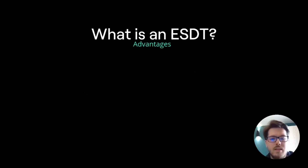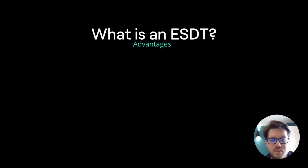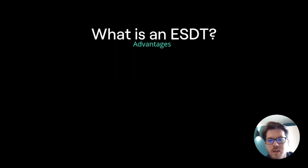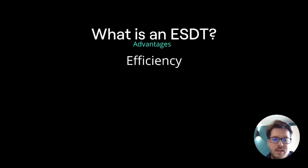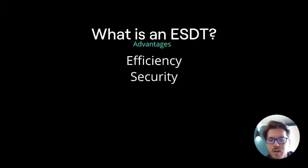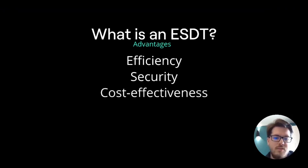Unlike other blockchains where custom tokens need a dedicated smart contract like ERC20, ESDT transfers are executed at the protocol level without a smart contract or virtual machine. This ensures that ESDTs are highly efficient — handling and transferring tokens becomes more secure, quicker and cost effective.